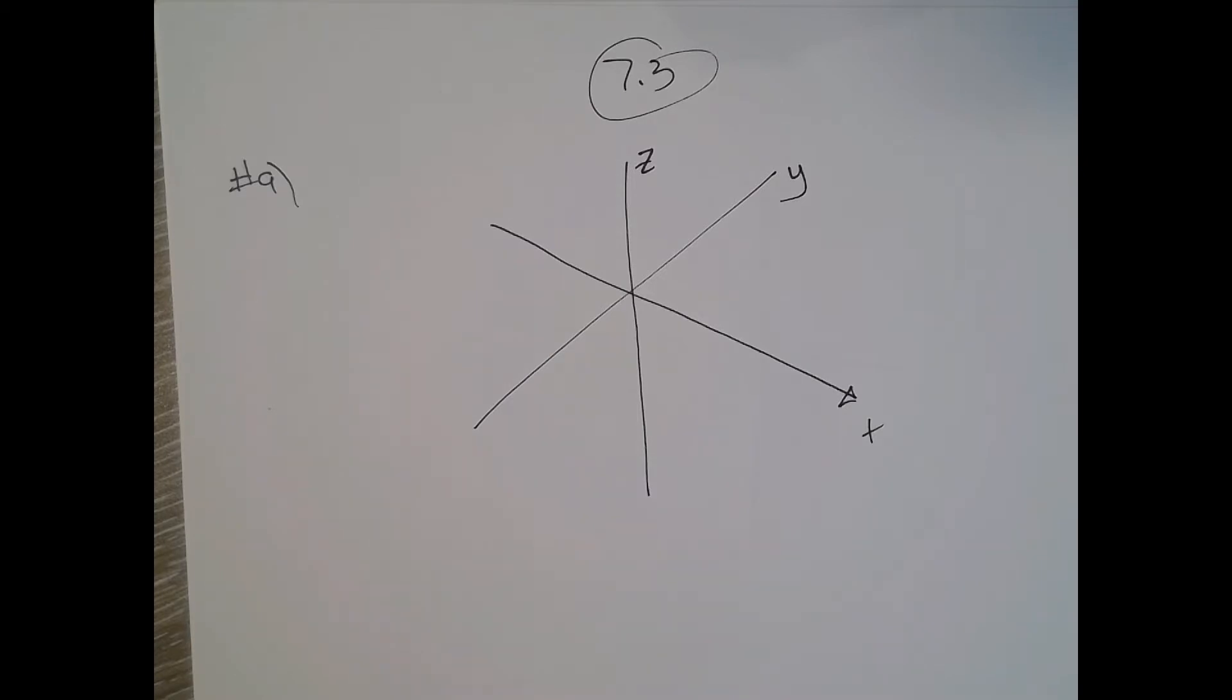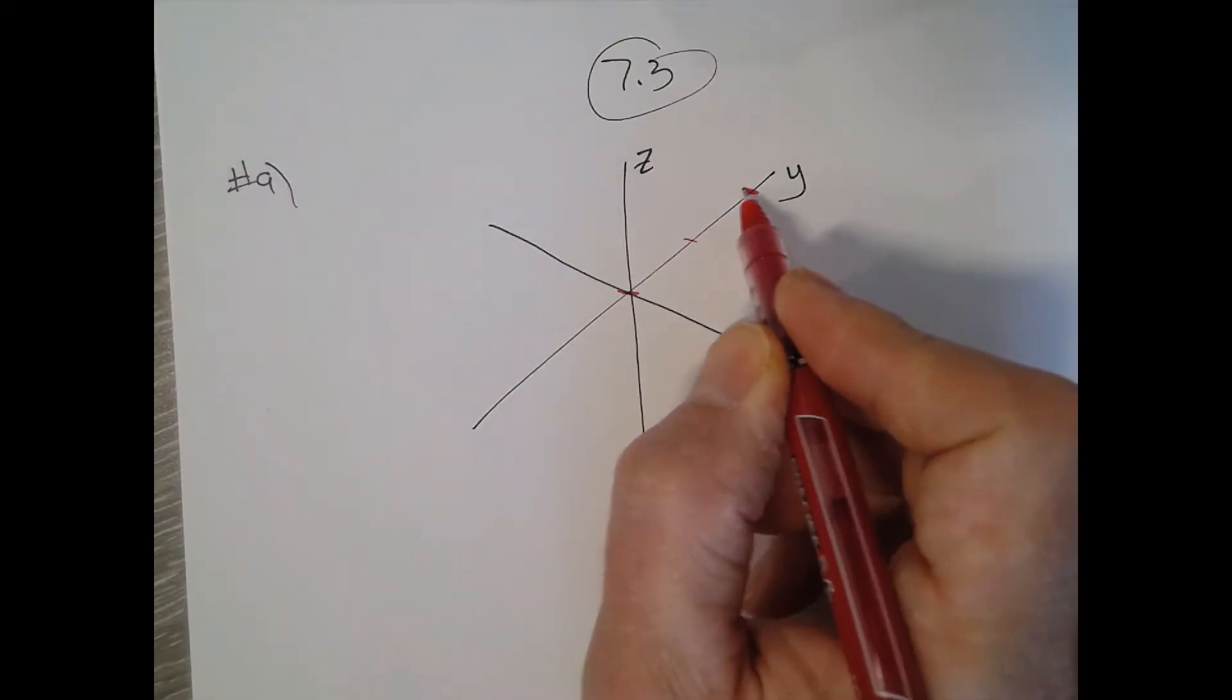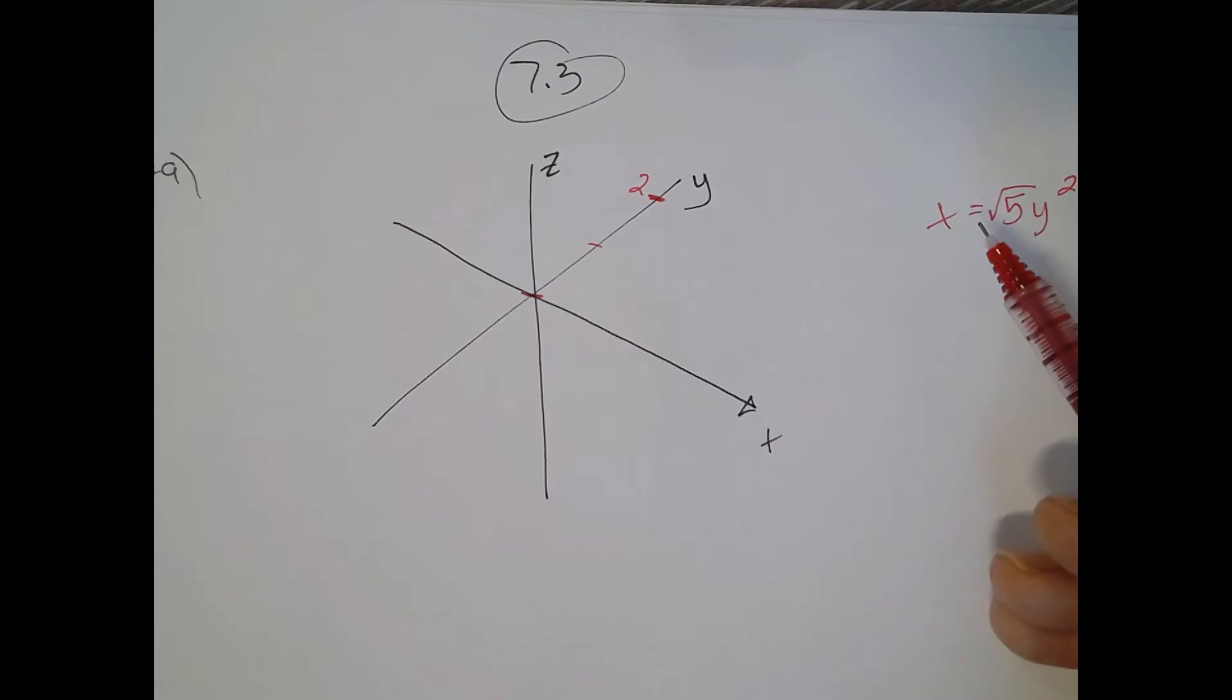So y equals 0, y equals 2. The cross-sections perpendicular to the y-axis are circular disks with diameter running from the y-axis to the parabola x equals the square root of 5 y squared. So the square root of 5 really isn't going to impact the shape that much, it just is how much it's stretched.